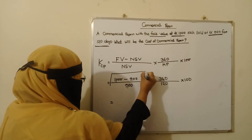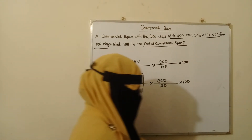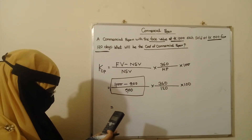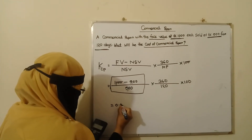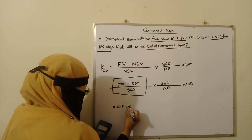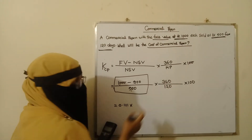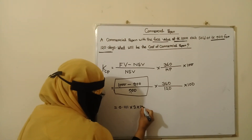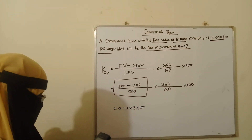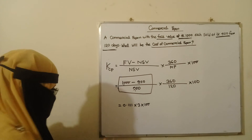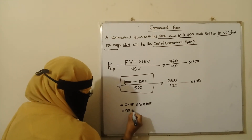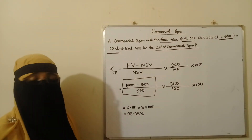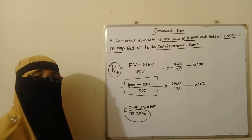First, we will do the calculation. Using 360 days in a year and the values given — 120,000 and 100,000 — we calculate the cost. The cost of commercial paper is 33.33%.